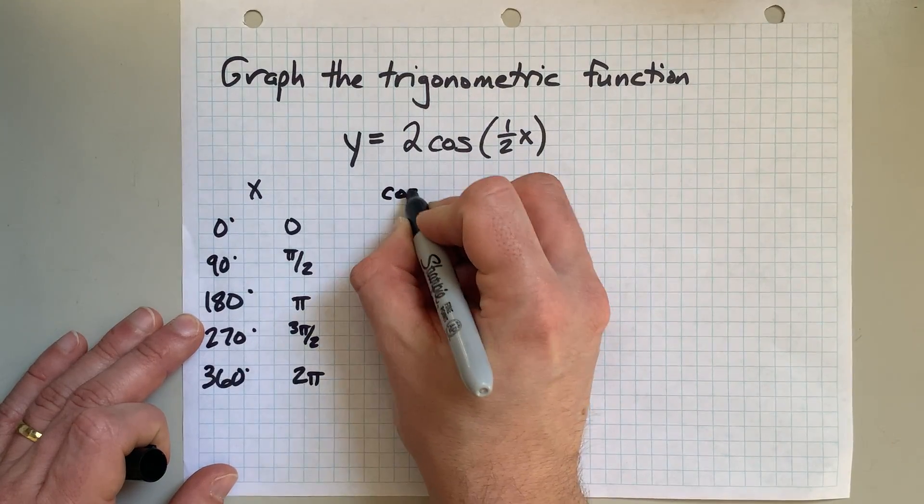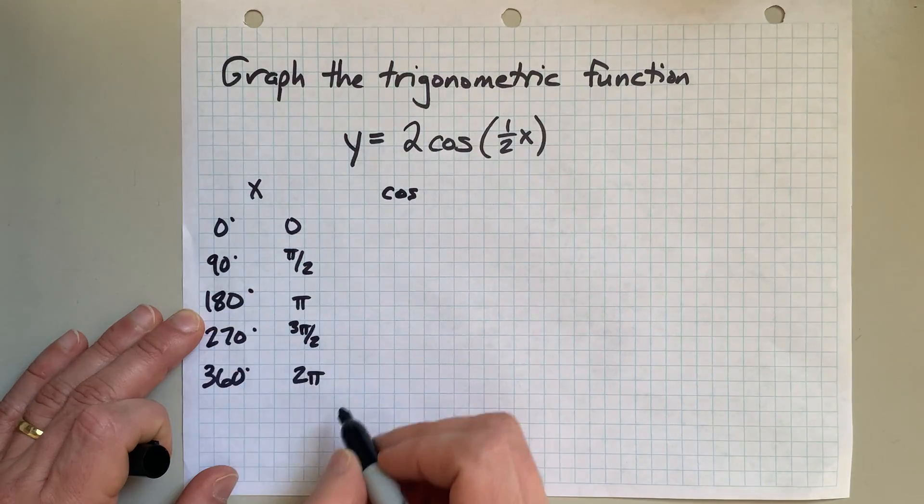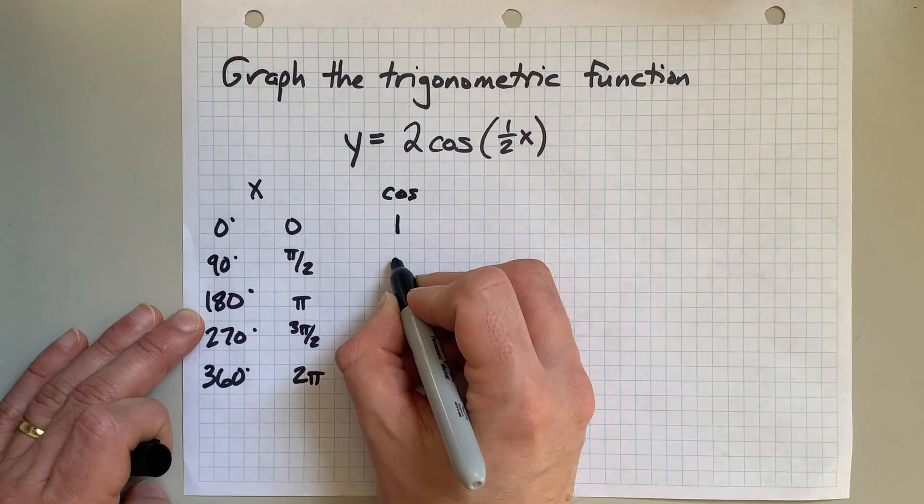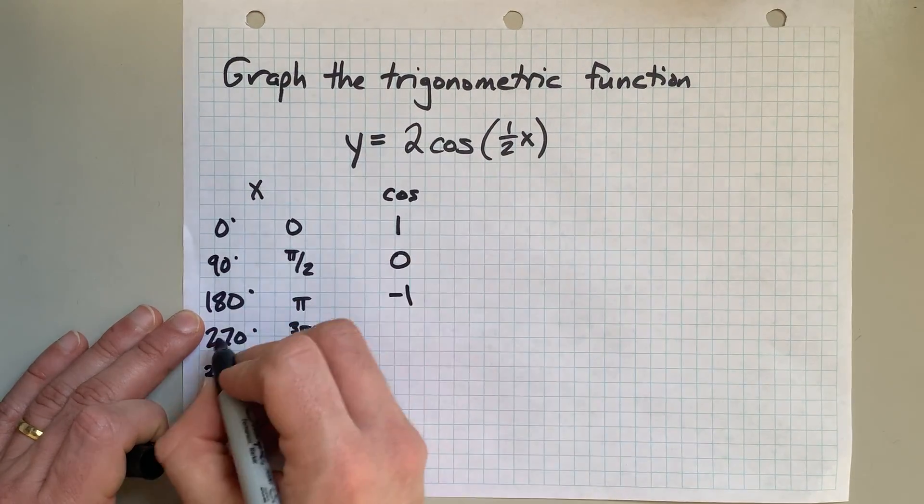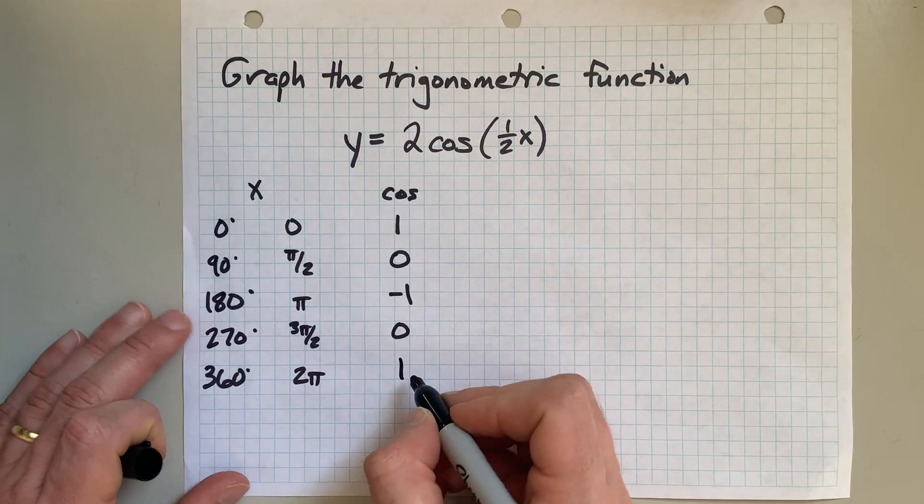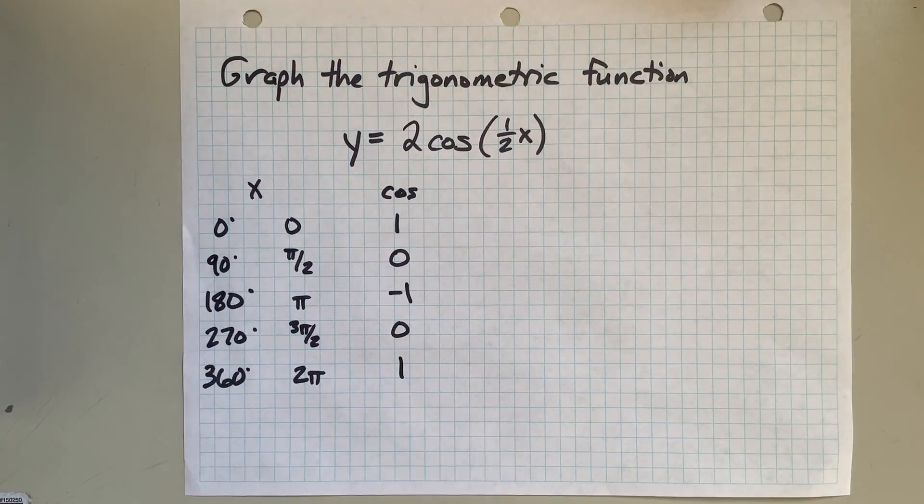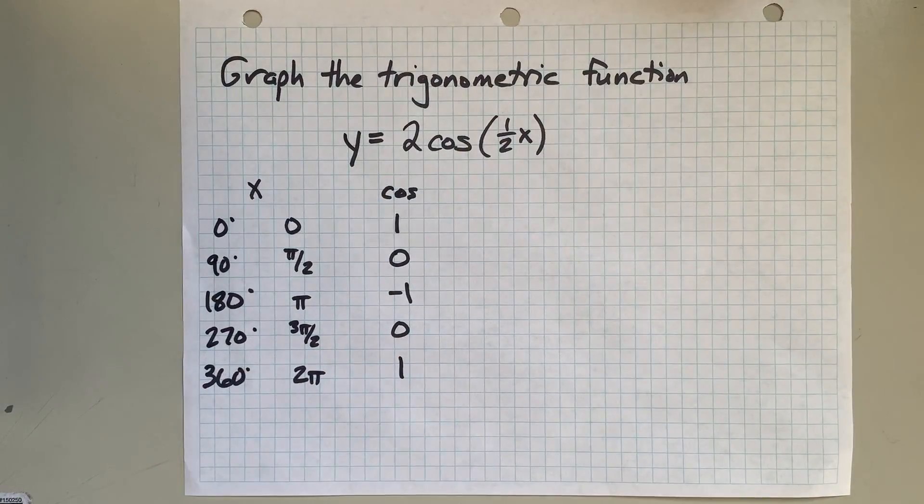Now normal cosine of that value of x: the cosine of 0 is 1, the cosine of 90 degrees is 0, the cos of 180 is negative 1, the cos of 270 is 0, and the cos of 360 is back to 1. 0 comma 1, 90 comma 0, 180 comma negative 1. This is the regular cosine function that you're familiar with.